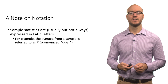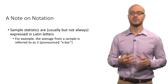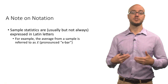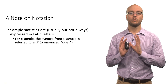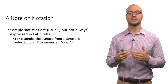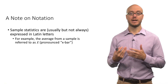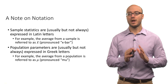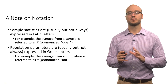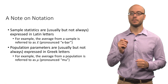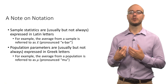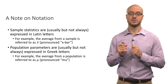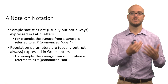Sample statistics are usually expressed in Latin letters — the letters used in English. For example, the average from a sample is labeled X-bar, an X with a bar over it. Population parameters, in contrast, are generally expressed in Greek letters. For example, the average from a population is referred to by the Greek letter mu. We distinguish between population parameters expressed in Greek letters and sample statistics expressed in Latin letters.